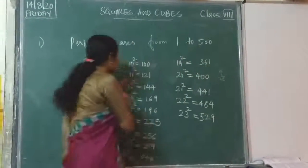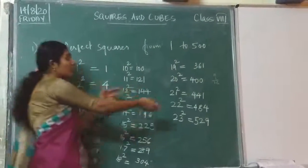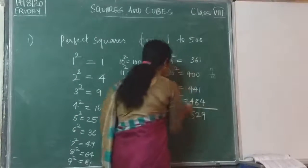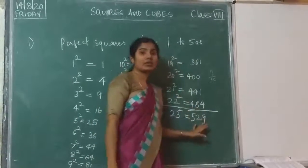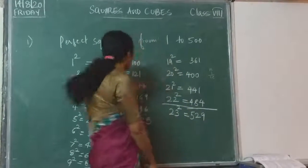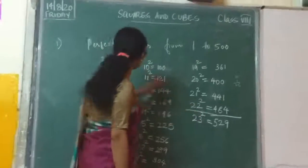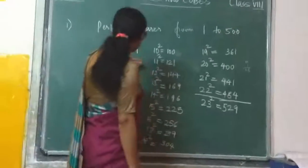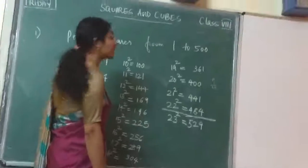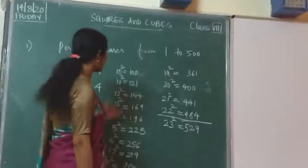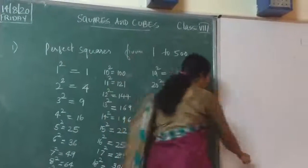But you need only perfect squares from 1 to 500. So here, we need all the perfect squares. All the perfect squares from 1 to 500 are: 1, 4, 9, 16, 25, 36, 49, 64, 81 — all the way till 484.